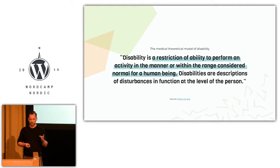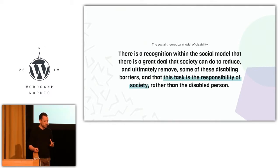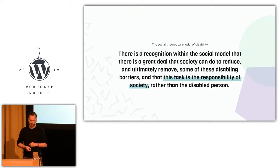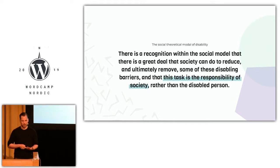It's not seen as something that concerns society or anybody else than the individual affected, and this is evidenced by the World Health Organization's definition of 1980. The second model, the social theoretical model, said there's a recognition that there's a great deal that society can do to reduce and ultimately remove some of these disabling barriers, and that this task is the responsibility of society rather than the disabled person. So basically, through designing everything to meet the needs of the average person, we are adding barriers to people with a disability.